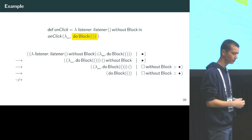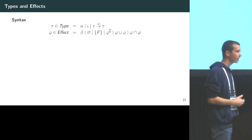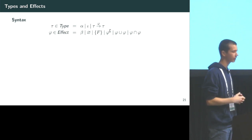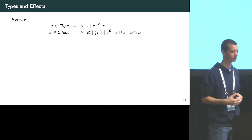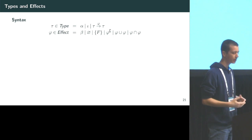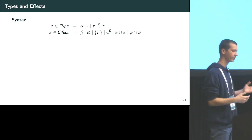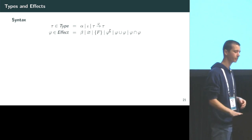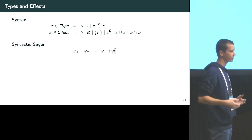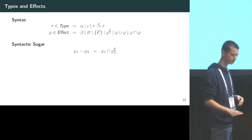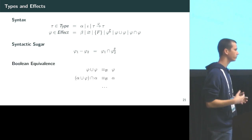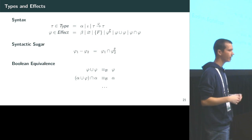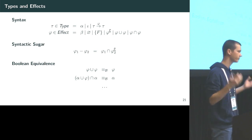We never actually want to get stuck, which is why we have a type and effect system. The syntax of our type system consists of types — variables, constants, and arrow types labeled with their effect — and effects consisting of set formulas: variables, the empty set, singletons, set complement, set union, and set intersection.